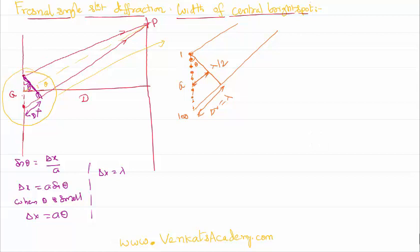As this is lambda by 2, we can divide the total number of the sources into two parts. So 1 to 50 there, 51 to 100 here. The divided sources where each point on the wavefront of that slit is acting like a source. The source 1 and 51 has a delta x of lambda by 2.